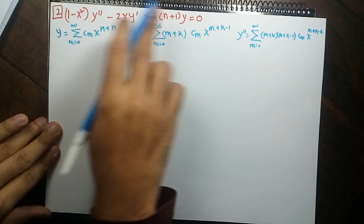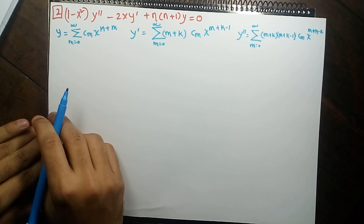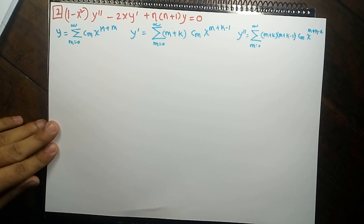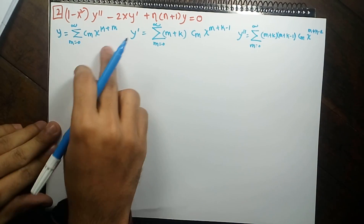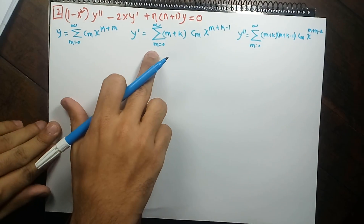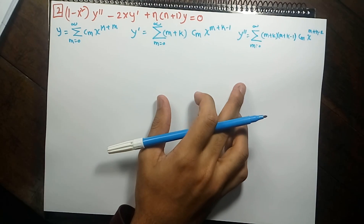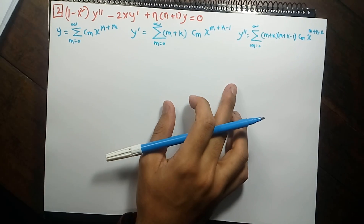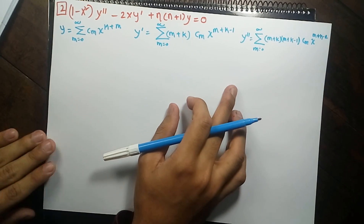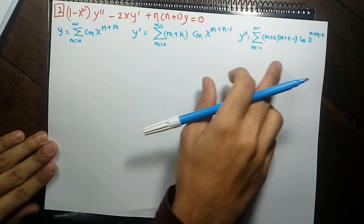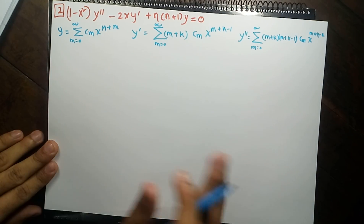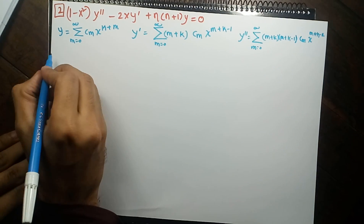So this is our equation. This equation has another name: the Legendre equation. We have come up with a trial solution, then its derivative and then its double derivative. And just like in the working rule, I will put these things into the original ODE and see what we find out.